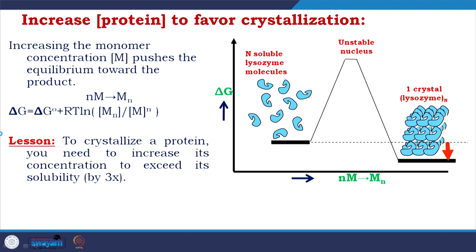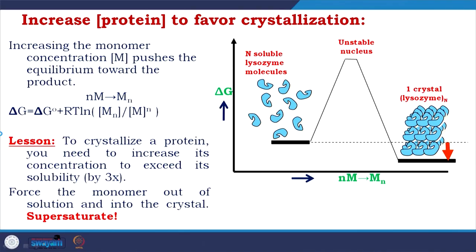Looking at the thermodynamic equation of spontaneity in terms of free energy: to crystallize a protein you need to increase its concentration to exceed its solubility — it should be over its solubility range. This brings us to supersaturation, which is very key to crystallization. Force the monomer out of solution and into the crystal — that is called supersaturation.